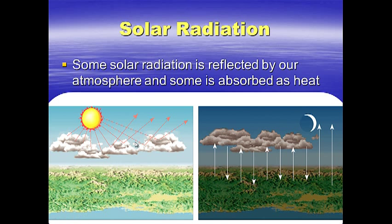Some solar radiation is reflected by our atmosphere — it hits clouds or air molecules and bounces back into space, like a giant mirror. Some is absorbed as heat, and our atmosphere insulates us and keeps us warm, so the atmosphere absorbs a lot of that radiation from the Sun.